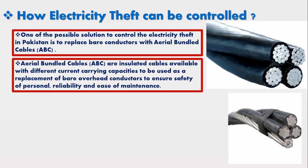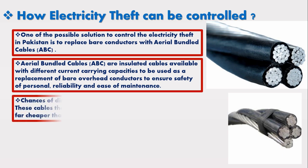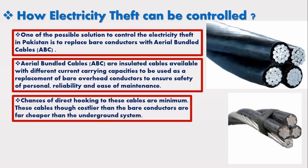Aerial bundled cables are insulated cables available with different current carrying capacities, to be used as a replacement of bare overhead conductors to ensure safety of personnel, reliability, and ease of maintenance. Chances of direct hooking or kunda to these cables are very minimum. These cables, though costlier than the bare conductors, are far cheaper than the underground system.